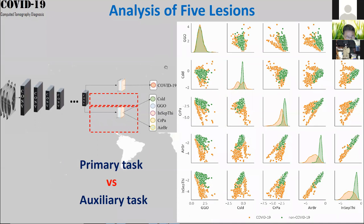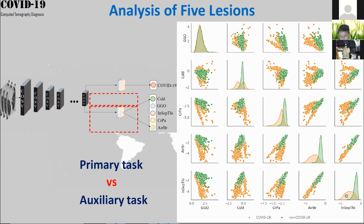We further analyzed the five lesion types. GGO alone cannot distinguish COVID-19 from non-COVID-19 because the distributions overlap. However, the other four lesion types show that the orange distribution (COVID-19 positive) and the green distribution (non-COVID-19) can be separated quite well.